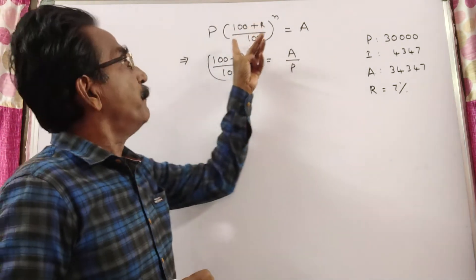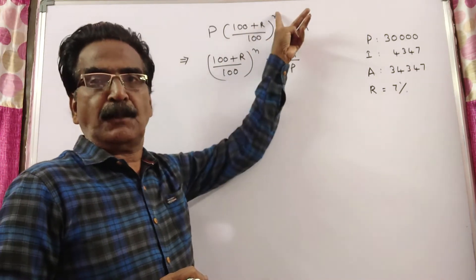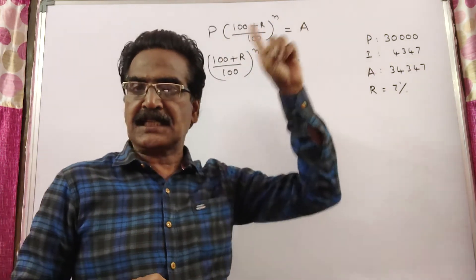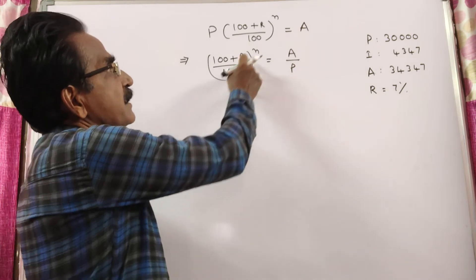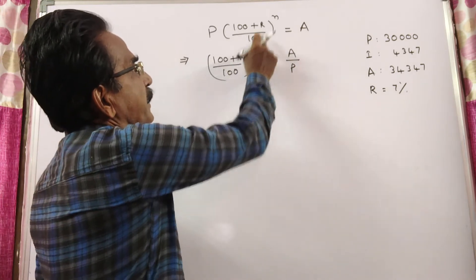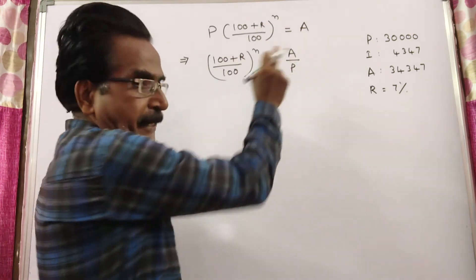For this problem, we know P times (100 + R)/100 whole power N equals A. This implies (100 + R)/100 whole power N equals A/P.